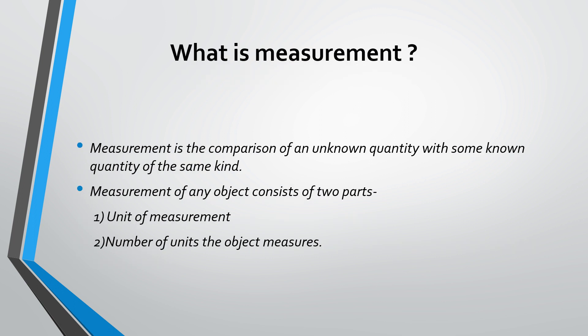Let us see what is measurement. Measurement is the comparison of an unknown quantity with some known quantity of the same kind. Measurement of any object consists of two parts: first is the unit of measurement, and second is the number of units the object measures. These two things are essential for measurement.